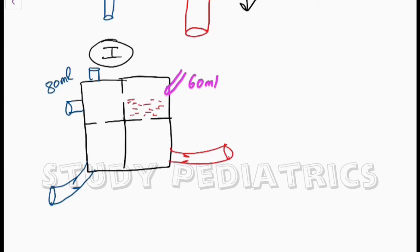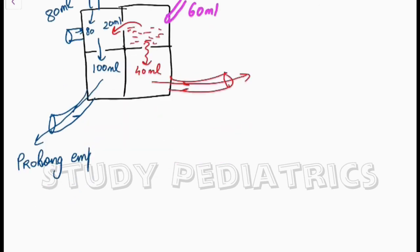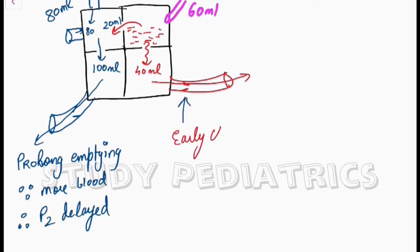From this 60 ml on the left side, 20 ml reaches to the right side through the ASD. Hence, the total volume in the right chamber becomes 100 ml and in the left it remains 40 ml. There occurs a prolonged emptying in the right chamber since more blood. Therefore, P2 is delayed. Similarly, in the left chamber there occurs early closure since less blood. Hence, A2 is early.